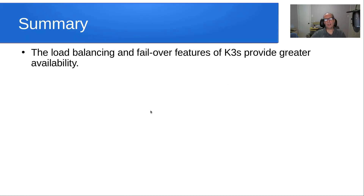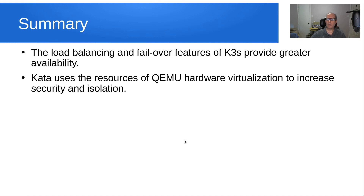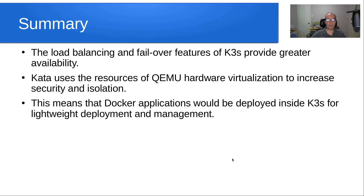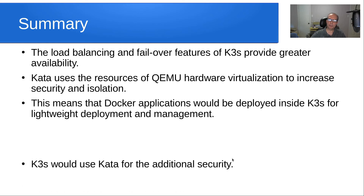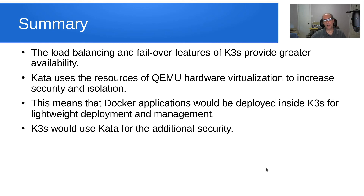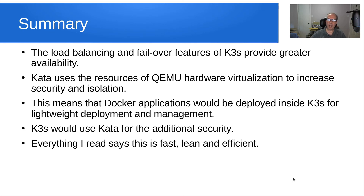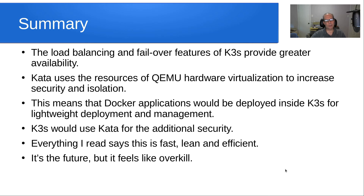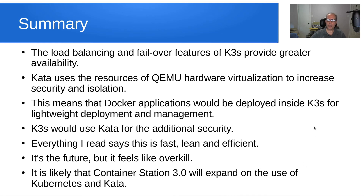In summary, the load balancing and failover features of K3S provide greater availability. Kata uses the resources of QEMU hardware virtualization to increase security and isolation. Docker applications would be deployed inside of K3S for lightweight deployment and management, and K3S would use Kata for additional security. Everything I've read says this is fast, lean, and efficient — it's the future. It feels like a little bit of overkill to have virtualization inside of virtualization, but I really believe it's designed to improve the stability of hosted applications. Container Station 3.0 will likely expand on the use of the K3S cluster and Kata, and we'll see what happens later this year.